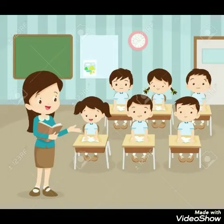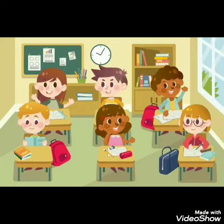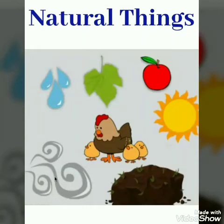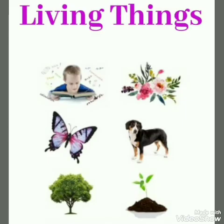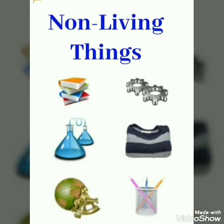Good children, now we are going to learn a few new words for reading and writing practice. Shall we? N-A-T-U-R-A-L, natural. T-H-I-N-G-S, things. Natural Things. M-A-N, Man. M-A-D-E, Made. T-H-I-N-G-S, Things. Man-Made Things. L-I-V-I-N-G, Living. T-H-I-N-G-S, Things. Living Things. N-O-N, Non. L-I-V-I-N-G, Living. T-H-I-N-G-S, Things. Non-Living Things. I hope that you enjoyed our today's class.